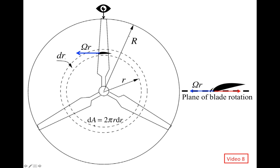In the last video, we talked about the velocity triangles using the airfoil located at the cross section of a vertical blade as an example. In this video, we will use the entire ring located at the radius r as an example to talk about the blade element momentum method, or BEM.